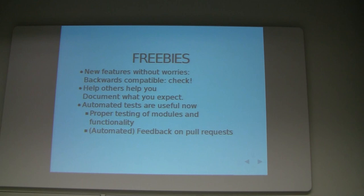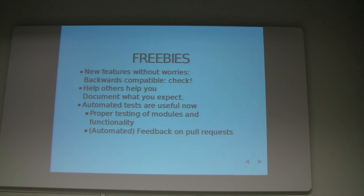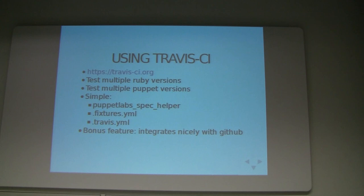What's the advantage of automation? Well, we can automatically see if the module still does what is expected. And if you combine Travis with GitHub, it will automatically test all the pull requests you get — you don't even have to pull in that code and check if your tests are still running. When you use Travis, that is done automatically.